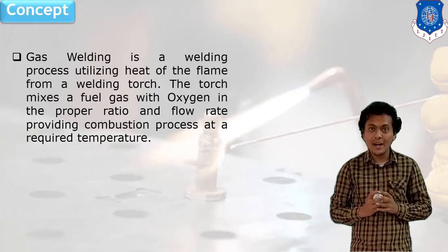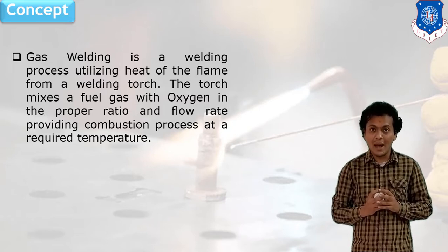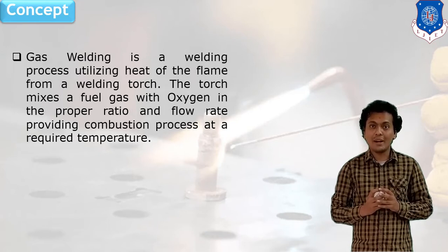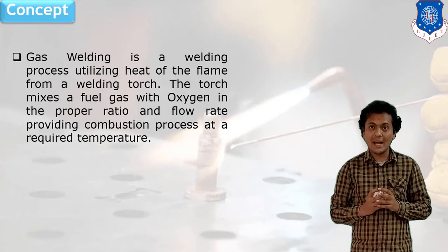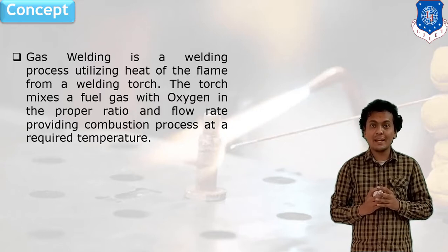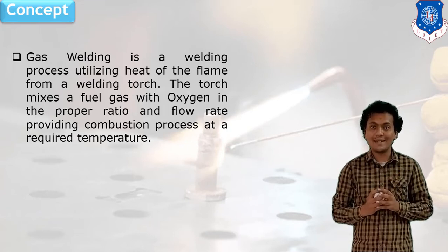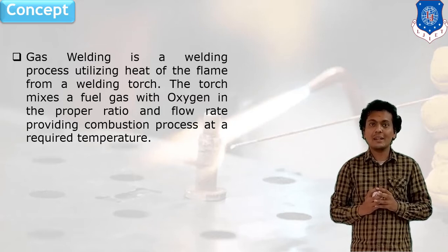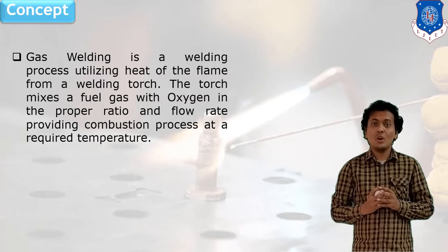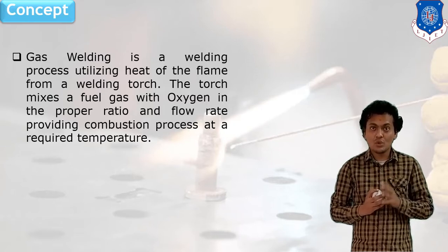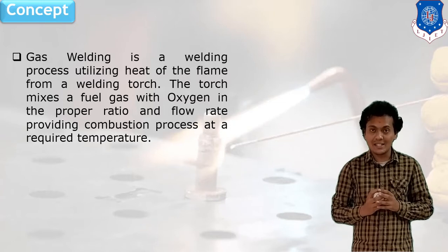In the gas welding process, heat will be generated by burning of gas — that is, by combustion of gases. This heat can be utilized for joining of two plates and make a permanent joint. The purpose of gas welding is with help of some combustible gases, we can generate the heat and join two plates together. Generally, oxygen and acetylene gases are used.